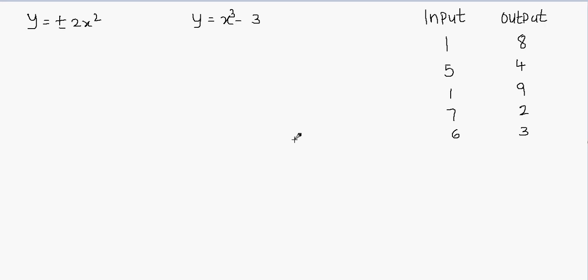In this video we'll learn how to determine whether each function shows y as a function of x. A function is a relation in which every input has exactly one output, or you can say that every x value has exactly one corresponding y value.